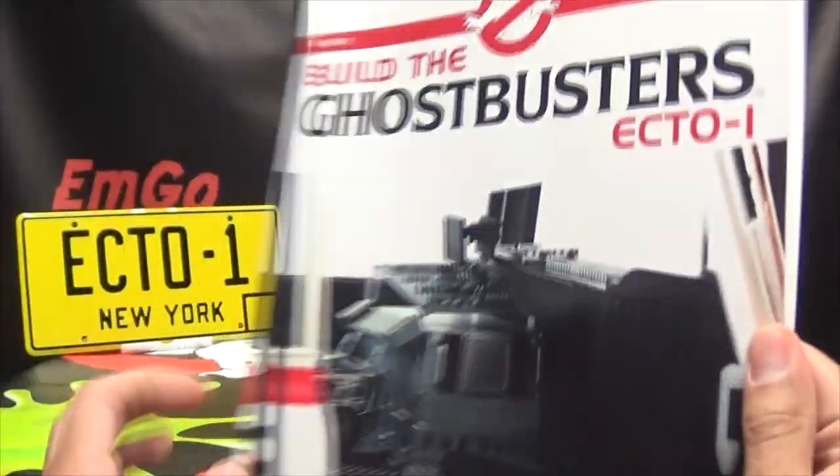Moving on with the Eagle Moss Ghostbusters Ecto-1 kit. And as you can see, yes, my lost issue 17 arrived. Hooray, we don't have to take a break. I'm happy. Here is issue 17, and as always, this will cover four separate assemblies in the build. Let's take a quick look through the magazine. Of course, we have our instructions and all that good stuff. But let's take a look at the meat and potatoes of the magazine. Oh, $5,000? I had no idea it would be so much. I won't pay it.